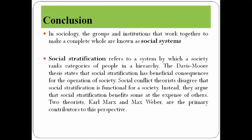To conclude, today we discussed two concepts: social system and social stratification. The groups and institutions that work together to make a complete whole are known as a social system, and we discussed two important social systems: family and religion. Social stratification refers to a system by which society ranks categories of people in a hierarchy. The Davis-Moore thesis states stratification has beneficial consequences for society, while conflict theorists like Karl Marx and Max Weber argue it benefits some at the expense of others.